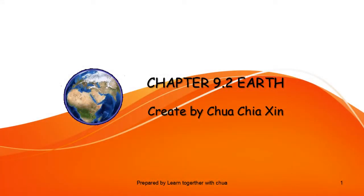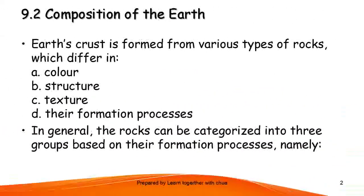Chapter 9: Earth. Earth's crust is composed of natural types of rock with variety in colour, strip-through, text-through, and their formation process. In general,